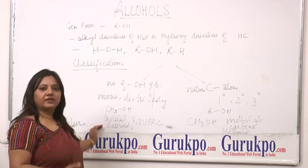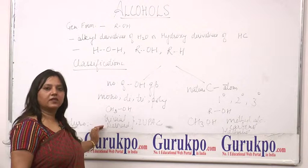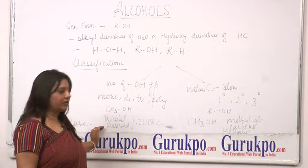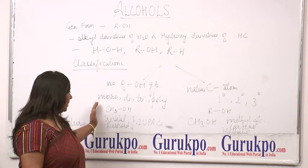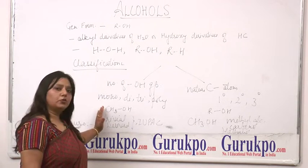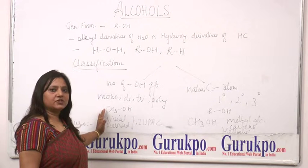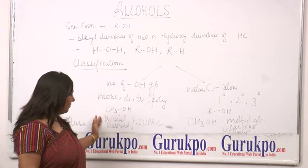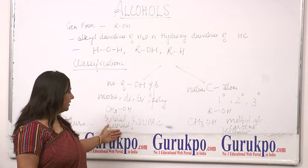Now, how do we write their names? That is what we call nomenclature. To do the nomenclature, there are three ways: the first is trivial, the second is derived, and the third is IUPAC.